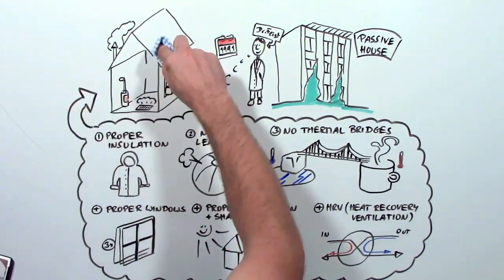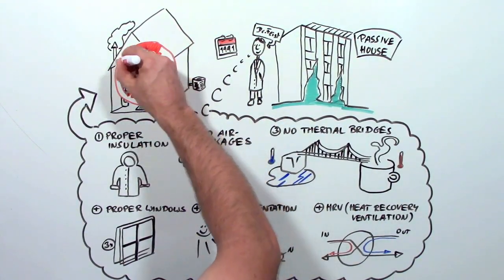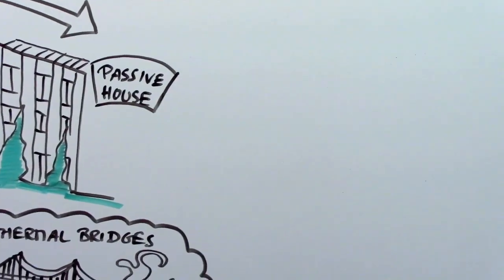Add all these things up and it turns out your house doesn't need a heater or an air conditioner. So where does the heat come from?